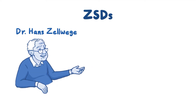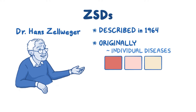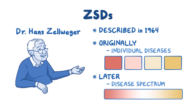ZSDs are named after Dr. Hans Zellweger, who first described the disease in 1964. ZSDs were originally characterized as individual diseases of varying severity; however, it was later determined that all of these diseases are part of the same disease spectrum.